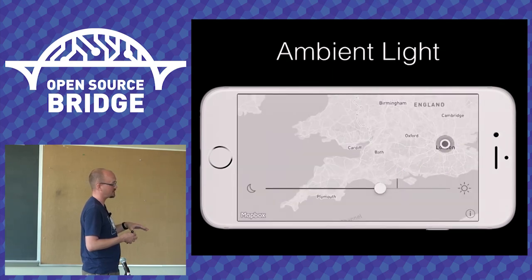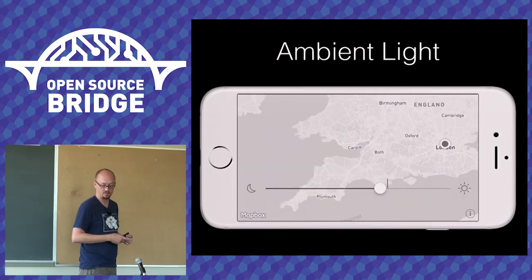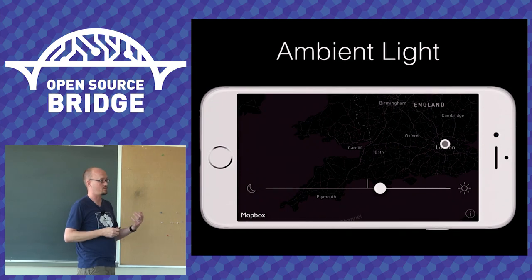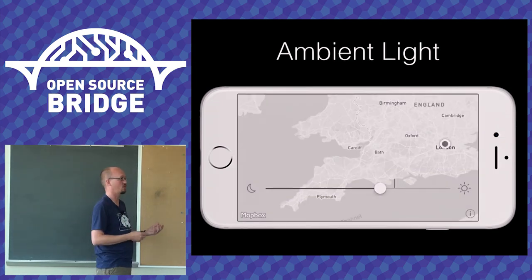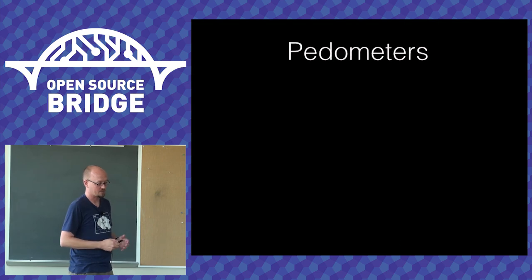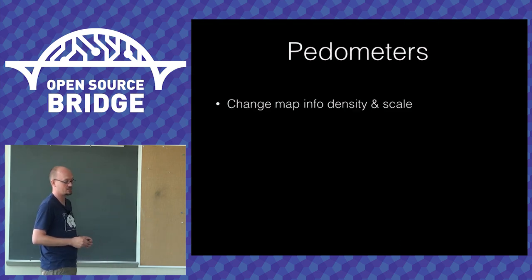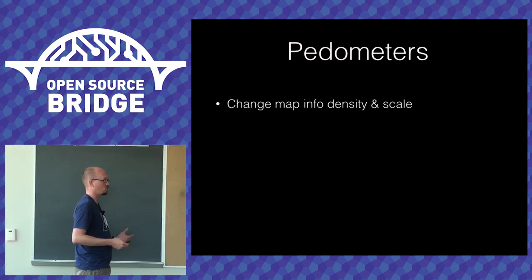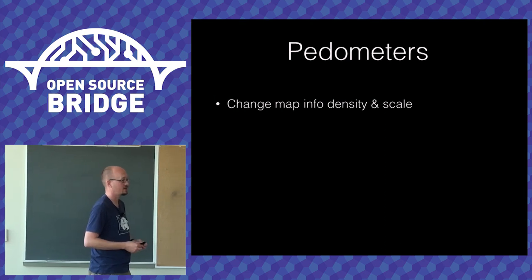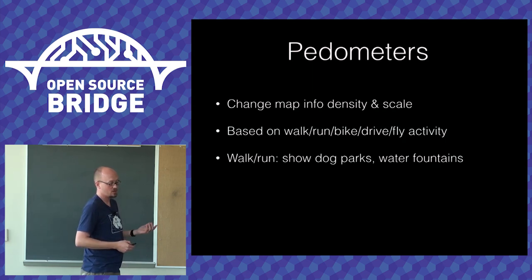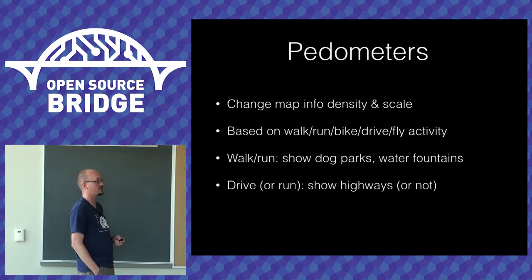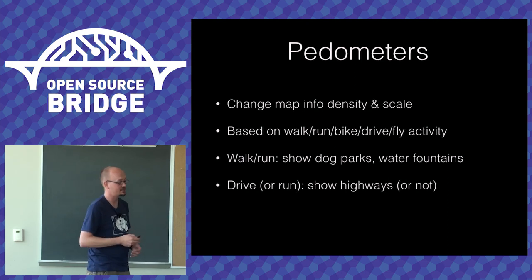You could change font size, fill color of a building based on whether the user has been there before, or any other data on the phone. Similarly, mobile devices can detect your activity — walking, running, biking, driving, flying — and automatically adjust the map: show dog parks and water fountains when walking, show highways when driving, de-emphasize highways when running a trail, show state park borders when flying.